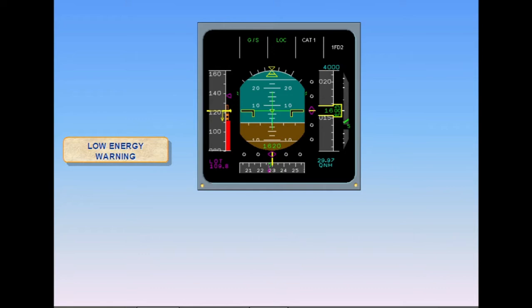If the autothrottle system is off and the speed drops below VLS — due to turbulence, wind shear, or inattention — a repetitive 'speed, speed, speed' aural warning is automatically triggered by the FACs. The warning is intended to divert attention to the speed scale with a subsequent thrust adjustment. This warning takes into account the aircraft deceleration rate and current flight path angle, which explains the low energy wording. Power must be added to correct the situation.